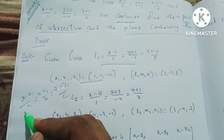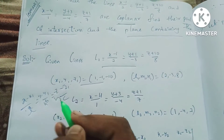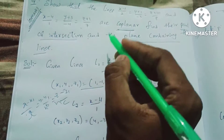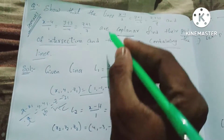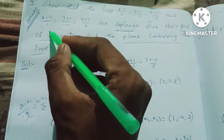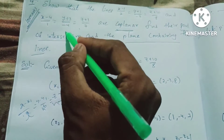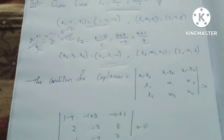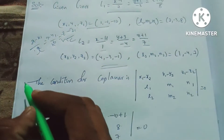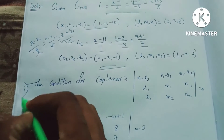Now let's look at the second line: (x−4)/1 = (y+3)/(−4). From this line we identify x2 = 4, y2 = −3, and direction ratios for line 2.